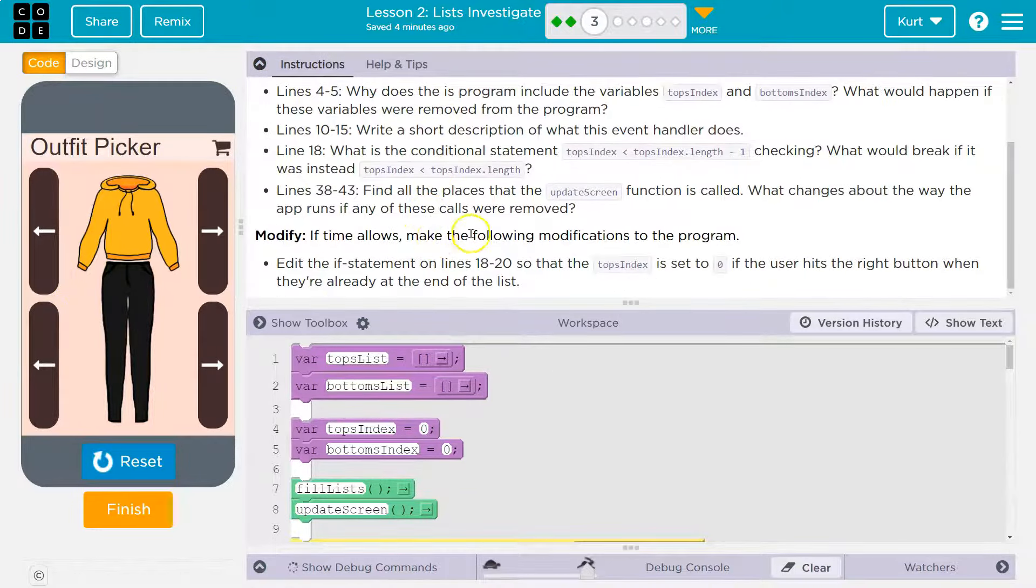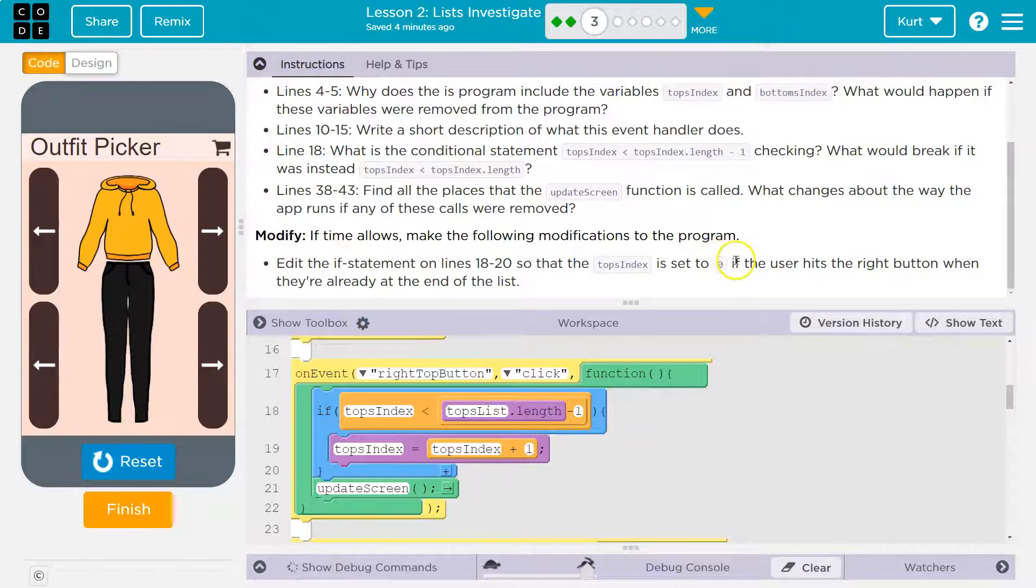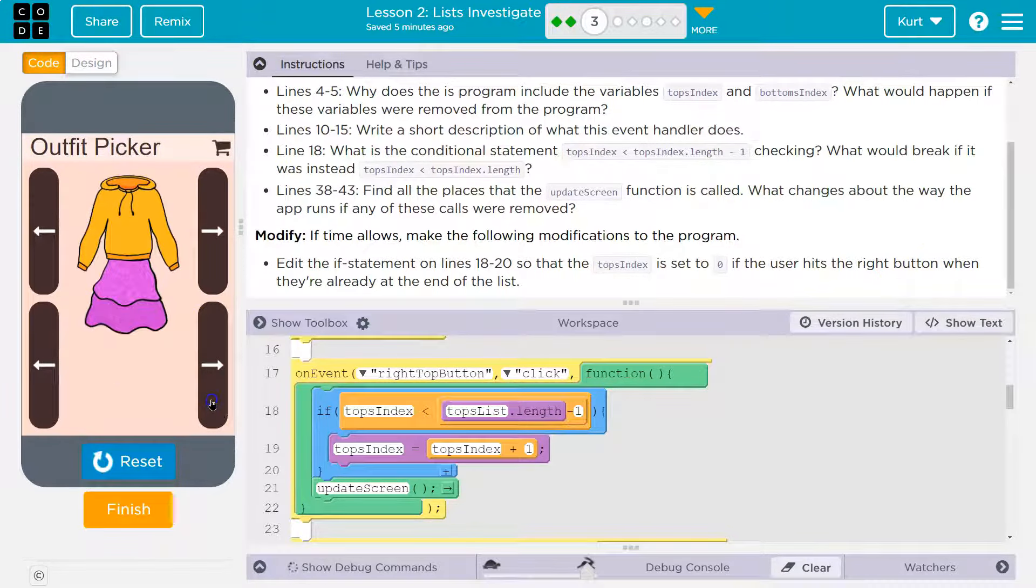Modify. If time allows, yes, make the following modifications to the program. Edit the if statement on line 18 through 20 so that the top index is set to zero, which is the beginning of the list when the user hits the right button when they're at the end. So that way it will loop forever. So right now it must not, I just get stuck. So what they're saying here is they want us to make sure, hey, are we at the end of the list? If so, they want us to set our index back to zero so it looks like it loops around.